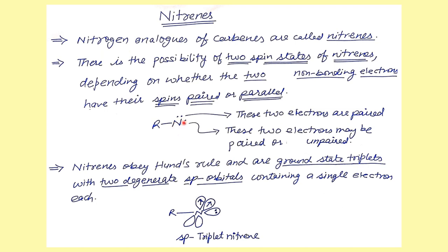Inside the nitrene, there are two unbonded electron pairs, one of which is always paired. The other electron pair can either be paired or unpaired — giving two possibilities: singlet nitrenes or triplet nitrenes. Nitrenes obey Hund's rules, and the ground state is the triplet form. In the triplet state, the unpaired electrons stay in different orbitals, and the hybridization of triplet nitrene is sp.